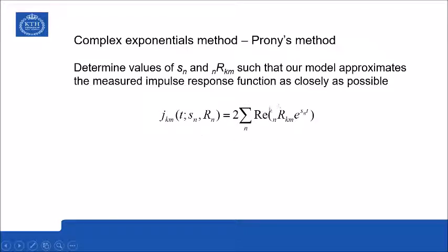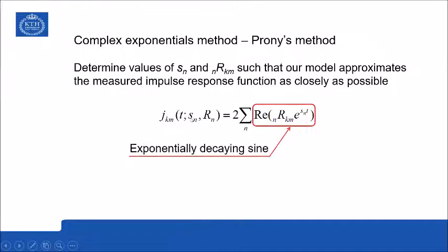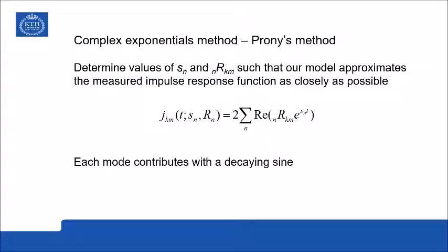Determine the values of the poles and residues such that our model approximates the measured impulse response function as closely as possible. Each term here is in fact a complex exponential, hence the name complex exponentials method. Each term is also an exponentially decaying sine, which is what we expect for physical reasons—oscillation with a decaying amplitude due to system losses. Each mode contributes to the impulse response with a decaying sine.